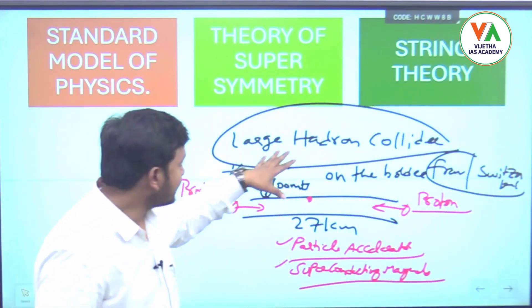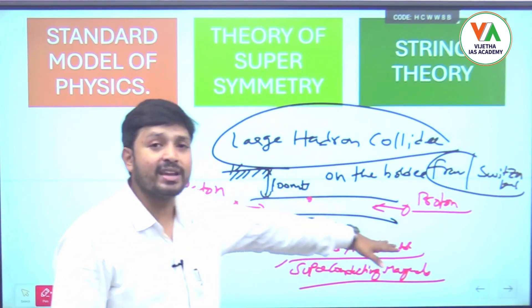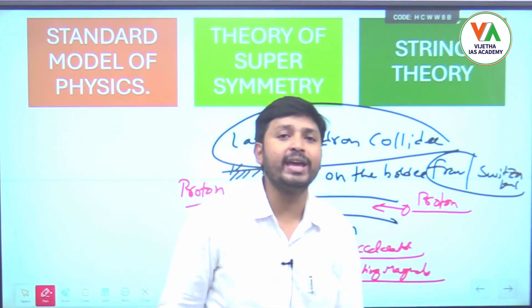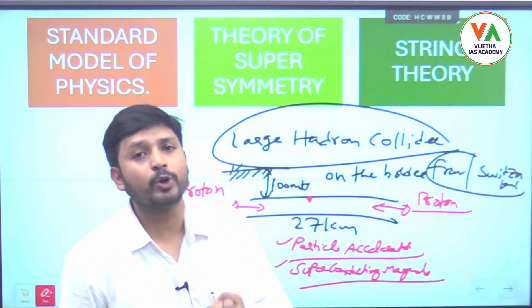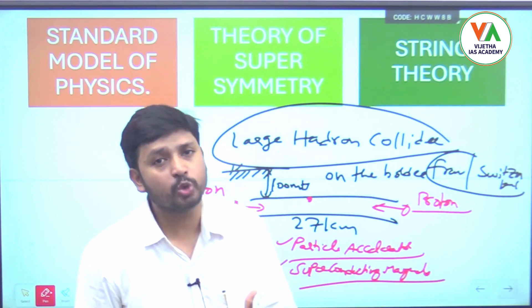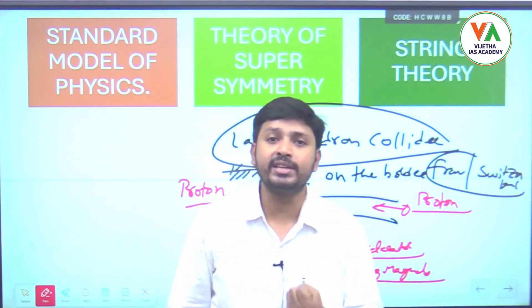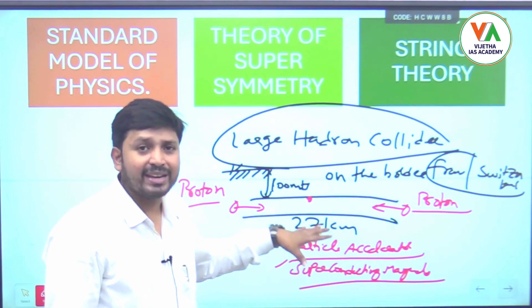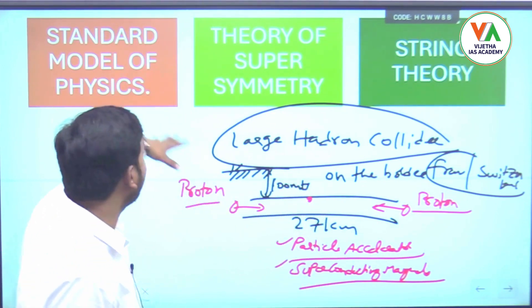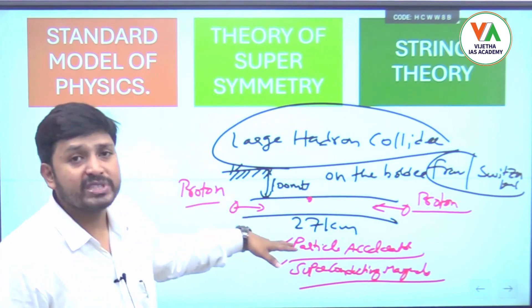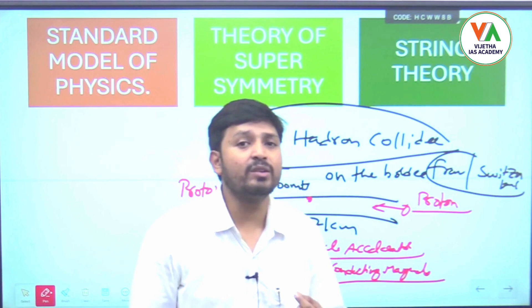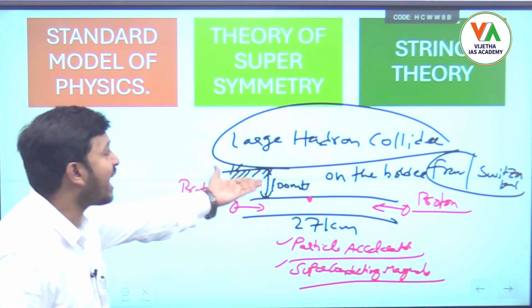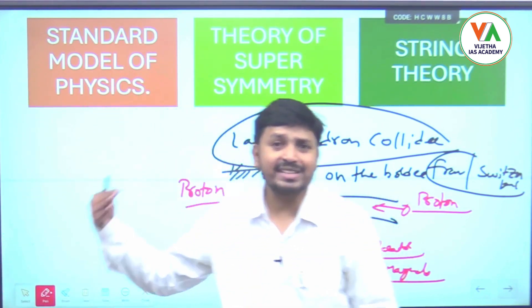This experiment was conducted near the France-Switzerland border, where a 27-kilometer tunnel was excavated 100 meters below the earth's surface. Particle accelerators and superconducting magnets were placed inside, proton beams were released from both ends and accelerated near the speed of light, then crashed together to replicate Big Bang conditions. This experiment is the basis for the standard model of physics.